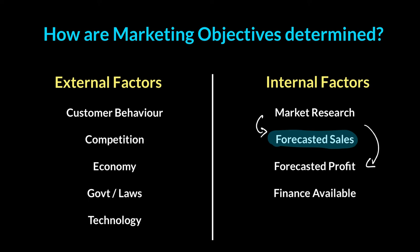Forecasted profit shows us whether a strategy is feasible and worth pursuing. Finally, the amount of finance available will determine how big or small your marketing budget is going to be — whether you can have a famous actor in your ad or someone unknown. All of these factors, both internal and external combined, help the business determine which marketing objective to follow for the following year.